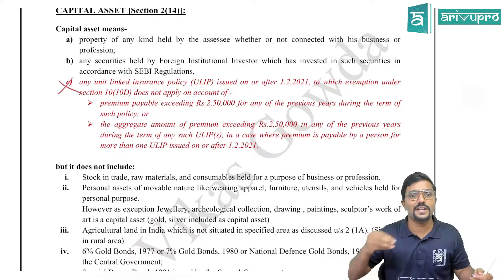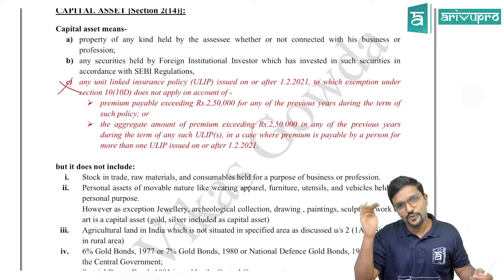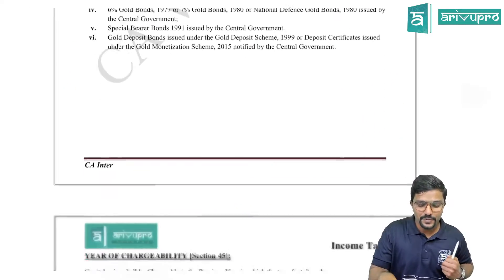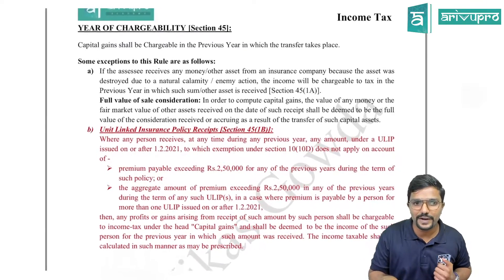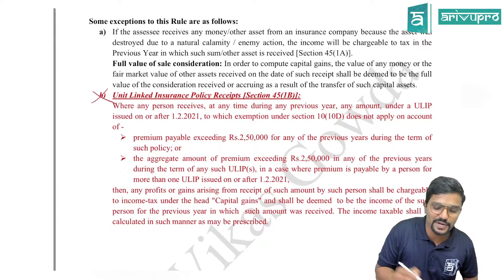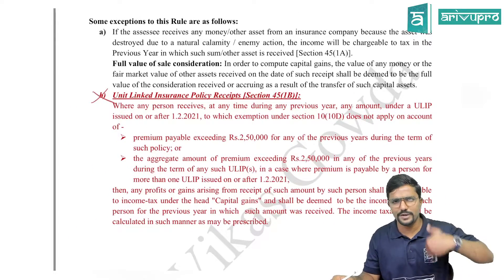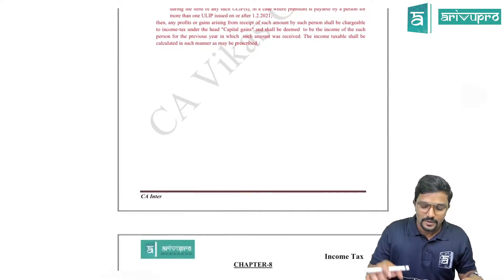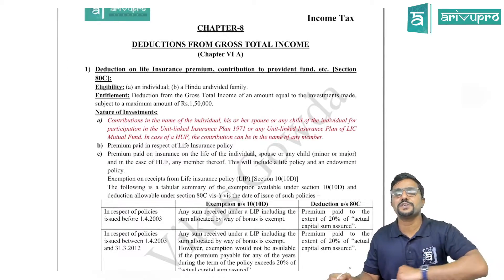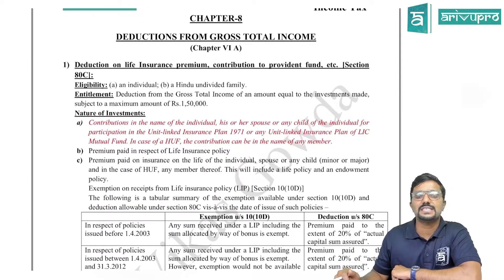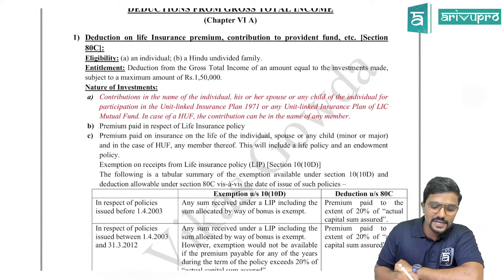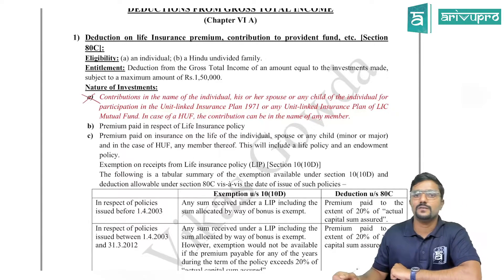It's not that they have removed ULIP from Section 2(14) — the actual definition still includes ULIP. The institute has just told that this ULIP part is not applicable for CA Inter examination. Coming to Section 45, the point B which talks about ULIP — scratch that also; you need not study this for November 22 exams or going forward. Also in the deductions chapter — Chapter 8 — under Section 80C for various types of investments, the first point related to ULIP must also be removed.